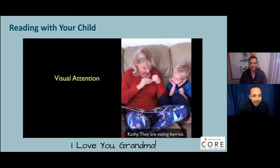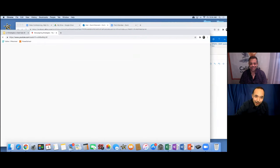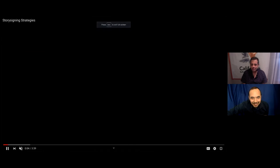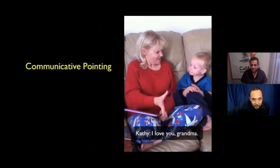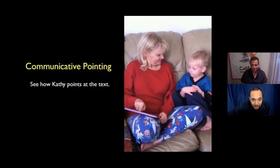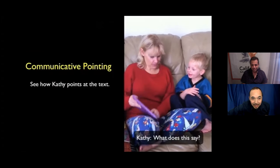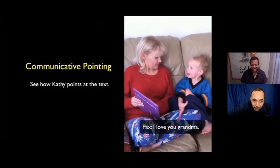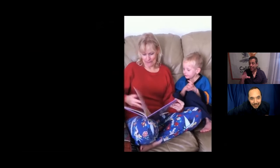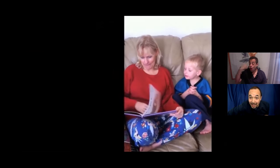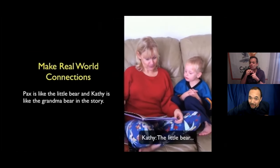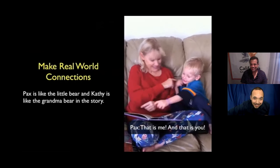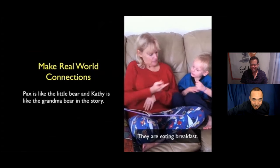Let us close with something people are doing at home right now. It says 'I love you, Grandma.' The grandmother points to the text, and the child signs 'Grandma.' She asks, 'What does this say?' He signs back, 'I love you, Grandma.' That child is older — not really looking at the pictures much, looking a lot at the words. The deaf grandmother is pointing to text and engaging interactively with the book.